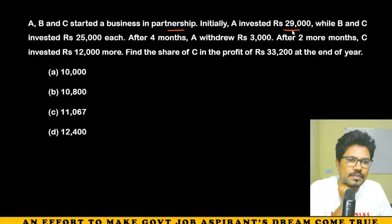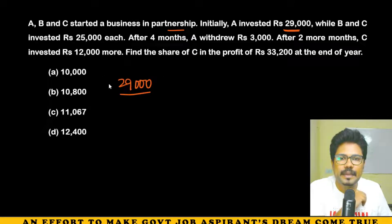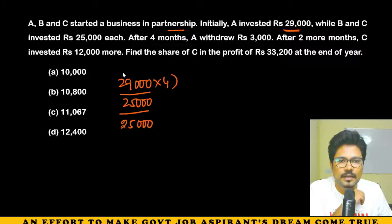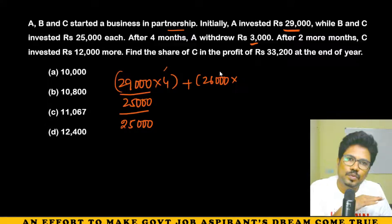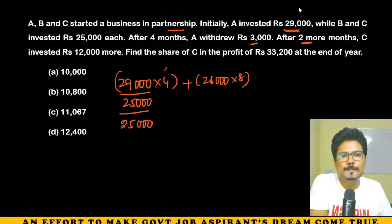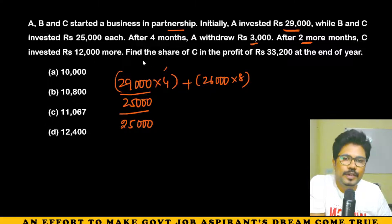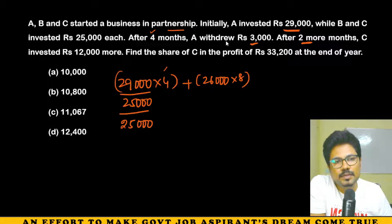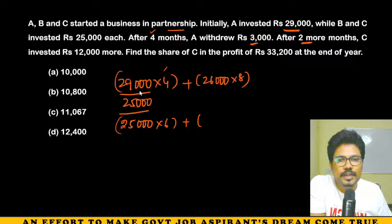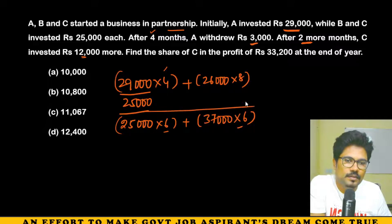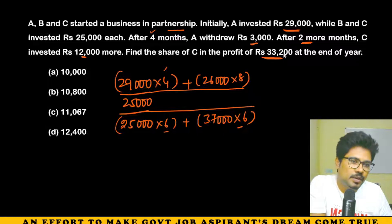Next question: A, B, C start a business. A invests 29,000, B and C invest 25,000 each. After 4 months, A withdraws 3,000, so A's investment becomes 26,000 for the remaining 8 months. After 6 months (2 more months later), C invests an additional 12,000, making C's investment 37,000 for the remaining 6 months. Find C's share in a profit of 33,200 at the end of the year.